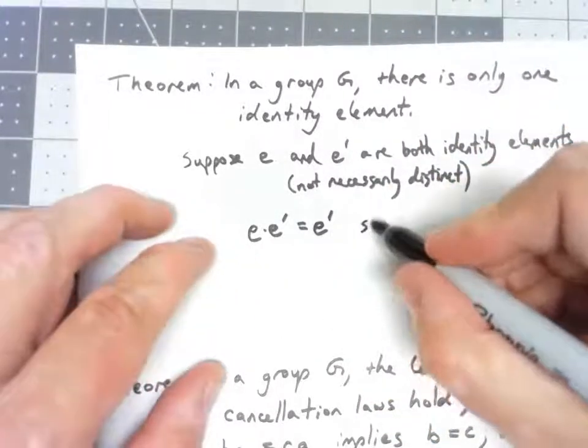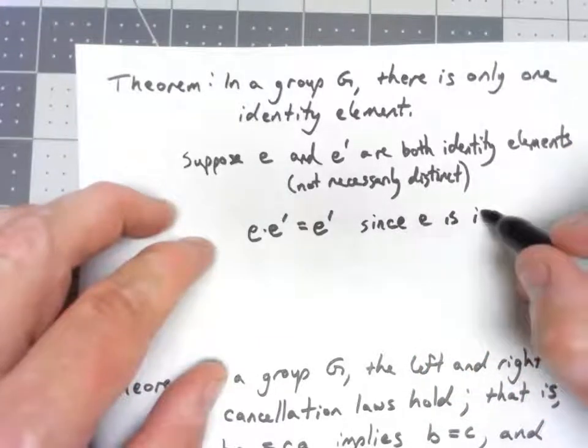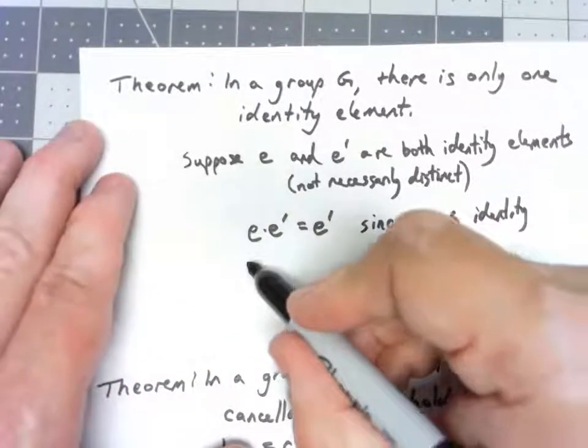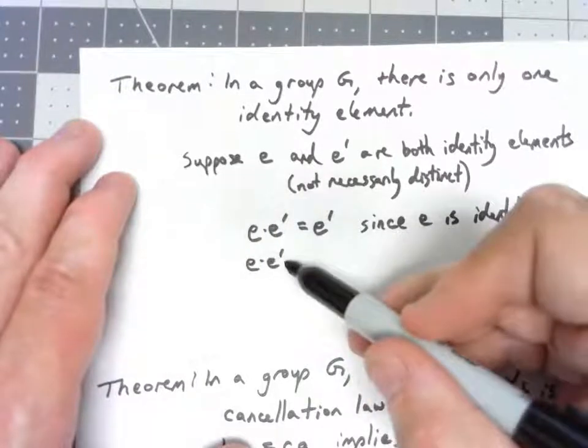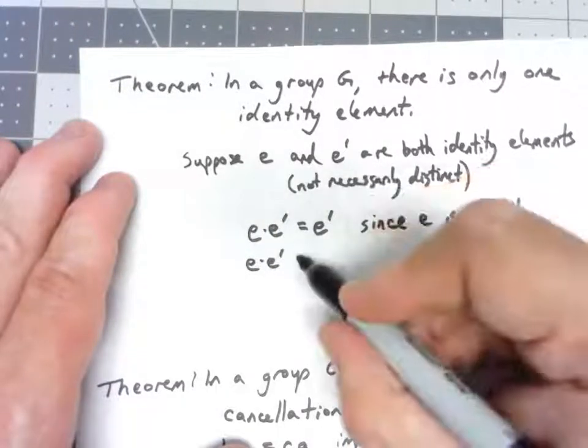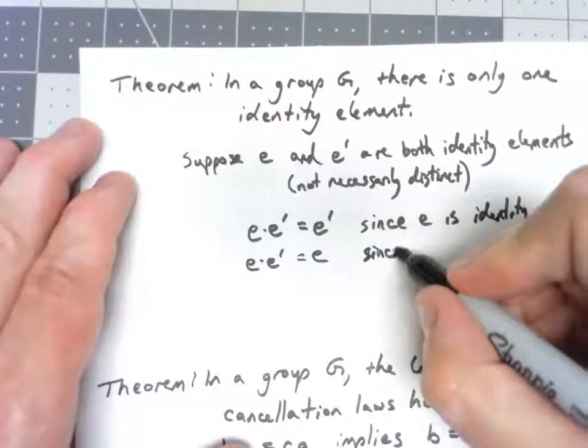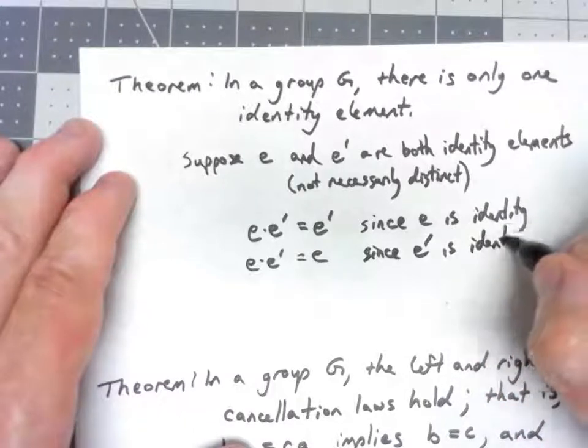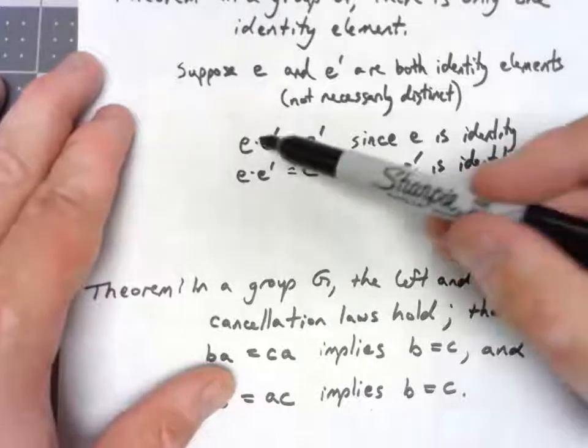But at the same time, since E' is an identity element, we know multiplying on the right by an identity element gives the other thing. So wait a minute, E times E'